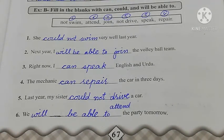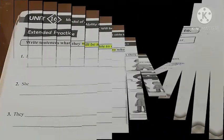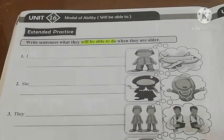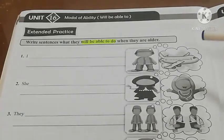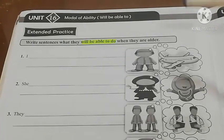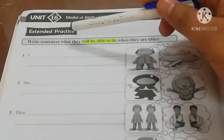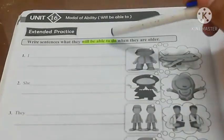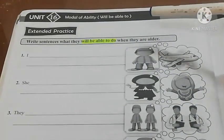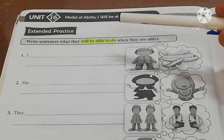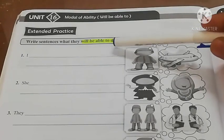Now it's time to move on to the next segment of this unit, which is the extended practice exercise. In the extended practice exercise, the thing you have to do is write sentences about what they will be able to do when they are older, using the 'will be able to' structure to talk about their future abilities.